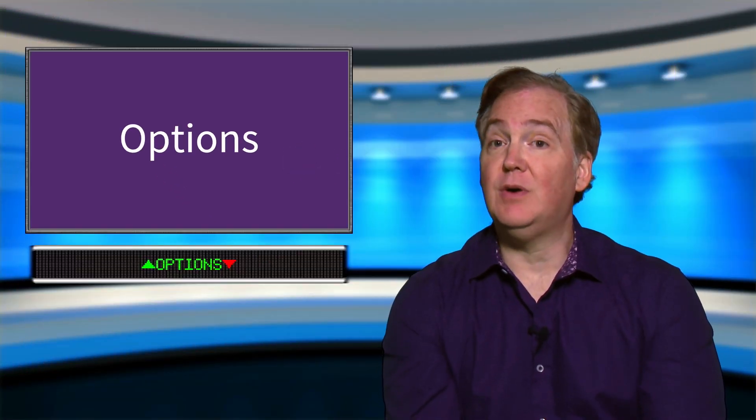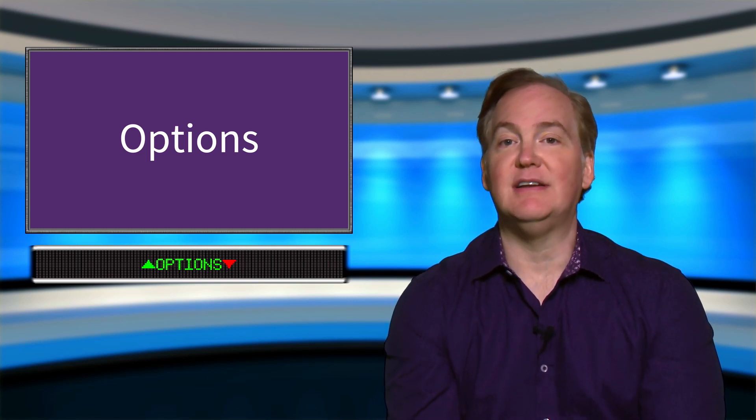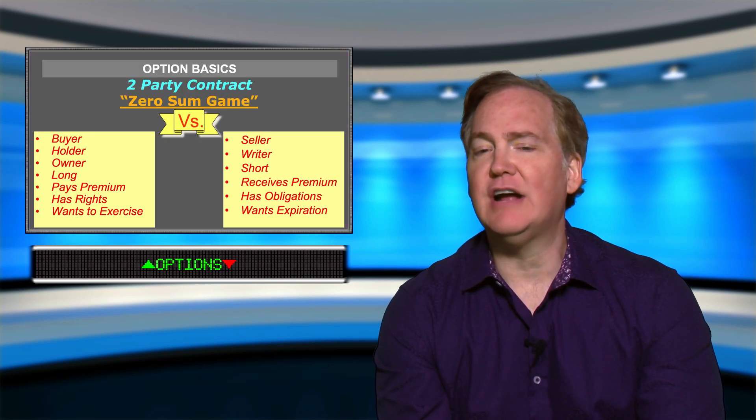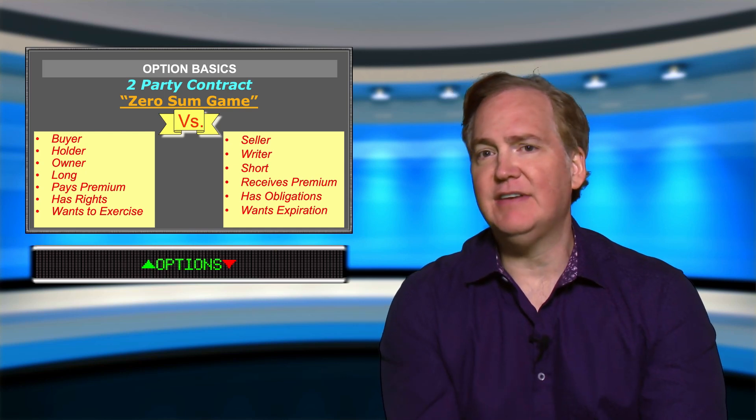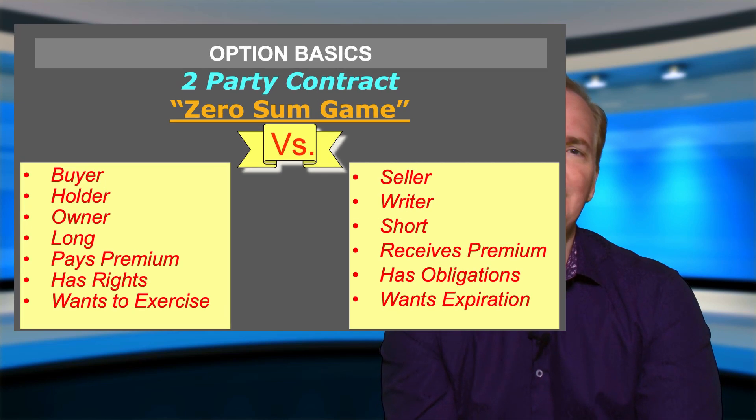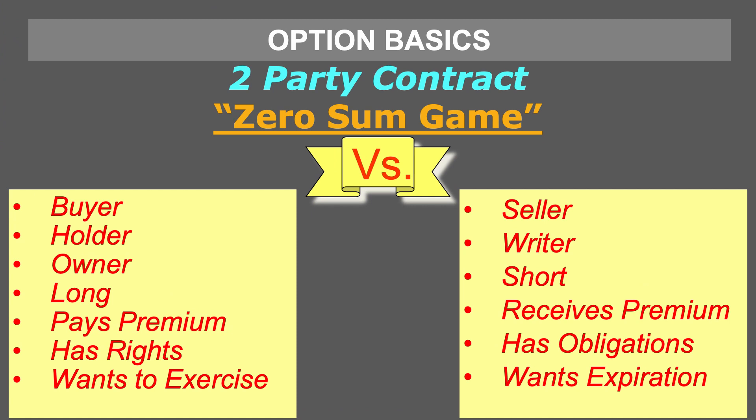Hello and welcome to this review on options. An option is a two-party contract between a buyer and a seller. The buyer is said to be the owner, the holder, or is said to be long the contract. The seller is also known as the writer or said to be short the contract.